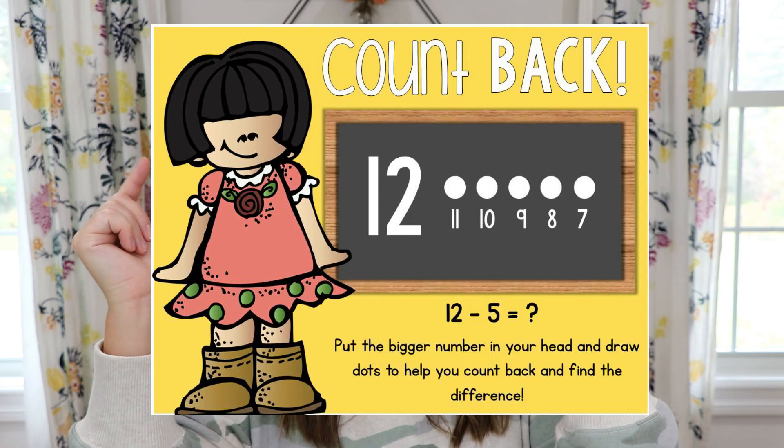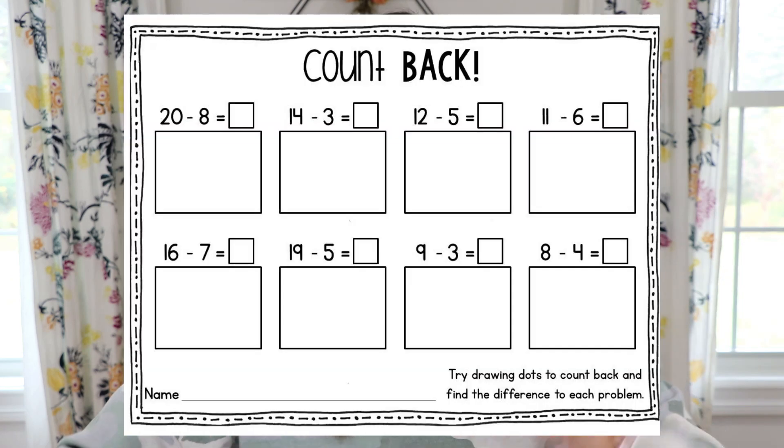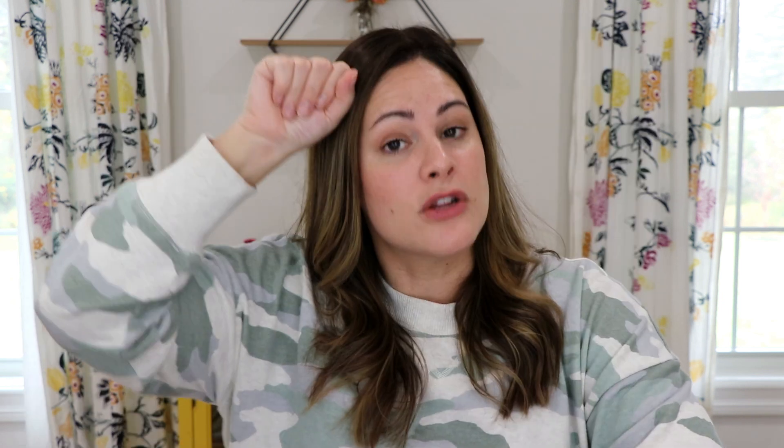The next strategy I like to teach is the counting back strategy — it's tricky but very important. Just like in addition where you put the number in your head and add on, here we are counting back. If the number is small enough, students can count back on their fingers, or they can draw dots as shown on the anchor chart. On the practice sheet, for something like 20 minus eight, they draw eight dots in the box, put 20 in their head, and count back as they point to each dot to find the difference. Now students have three ways to practice subtraction within 20: manipulatives, a number line, or counting back.